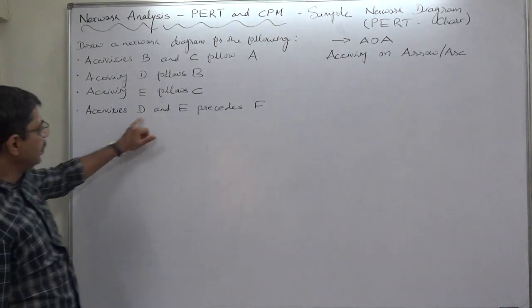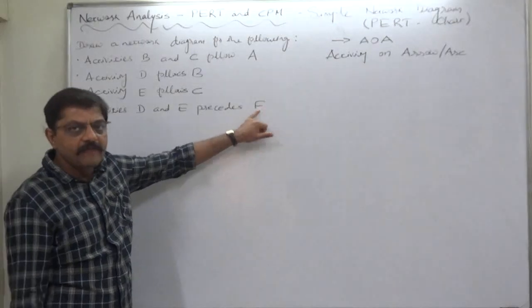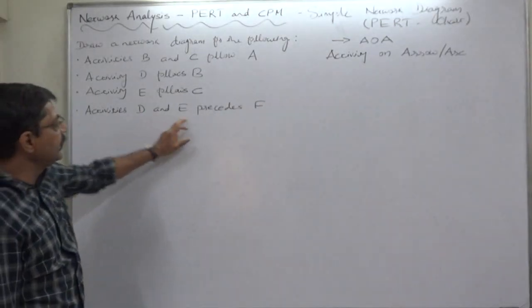And that means C is predecessor of E. Activities D and E precede F. That means D and E are predecessor of F. Similarly, F is the successor of D and E.